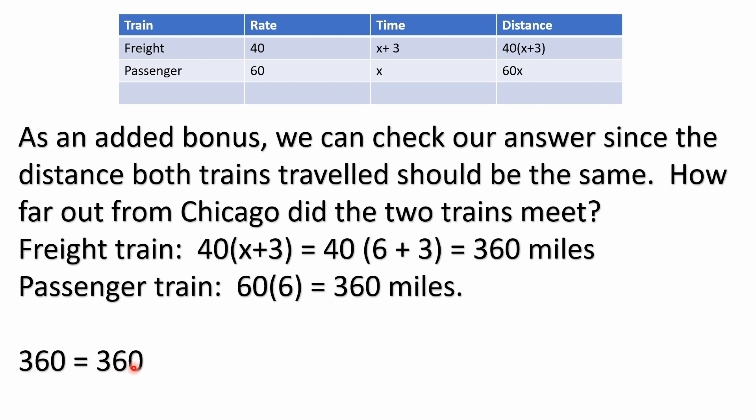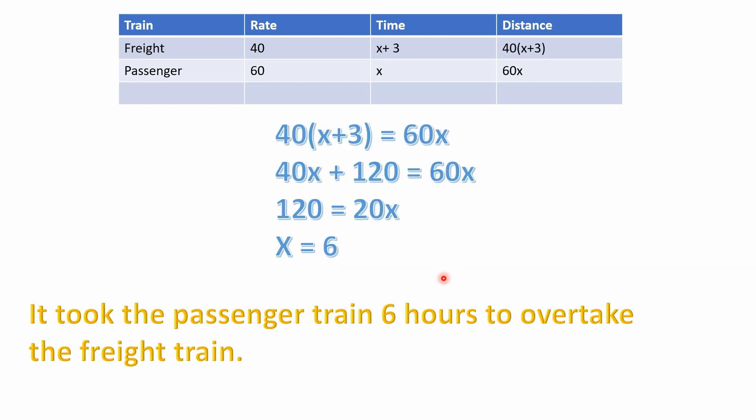Keep in mind we're not accounting for things like the trains ramping up from zero to their top speeds — whether that took a mile or two, we don't know. If you wanted to get really technical you could factor that in, but this is a simplified problem. The answer is x equals six hours.